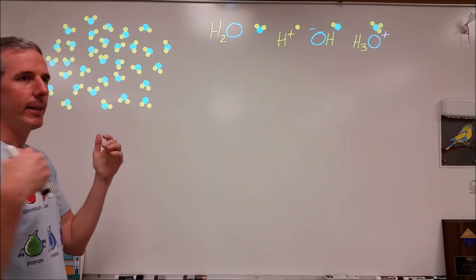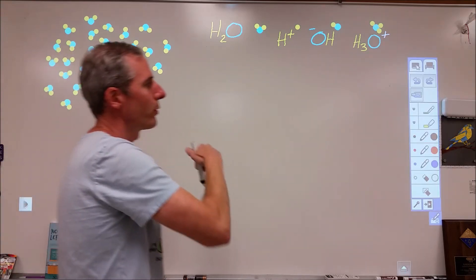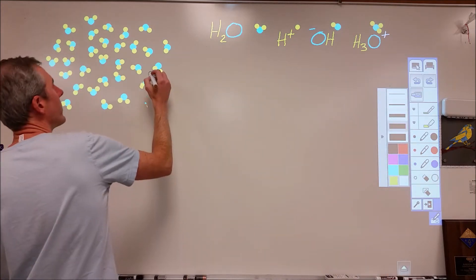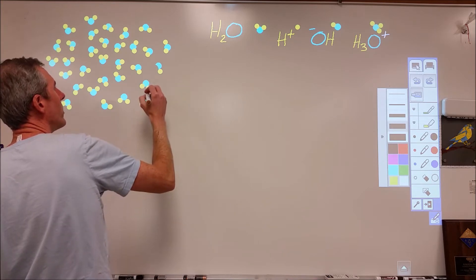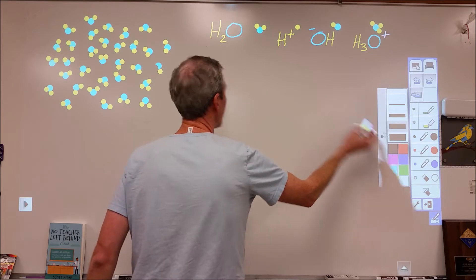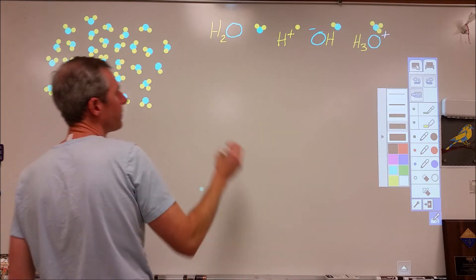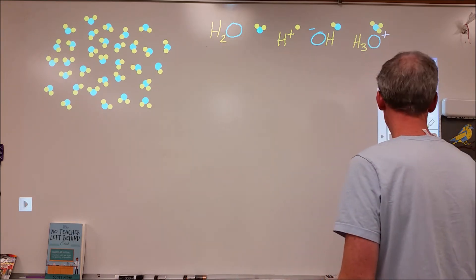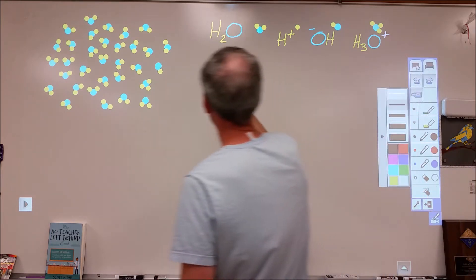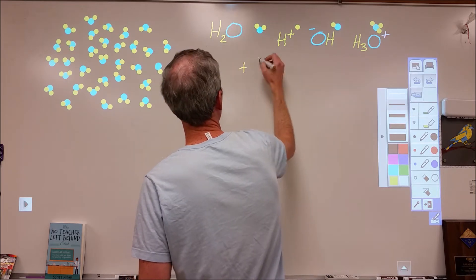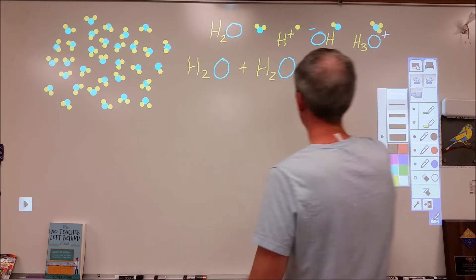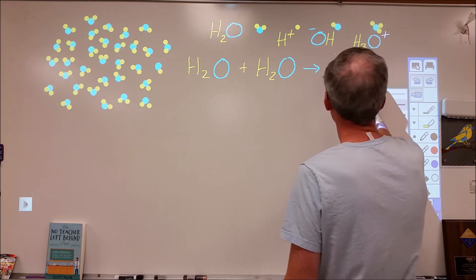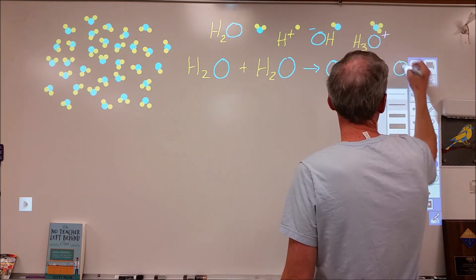Some of the times when they collide, they can hit really hard and in just the right way where one hydrogen moves from one to the other. If that happens — say this hydrogen leaves one water molecule and comes over to another — what we end up forming is a hydroxide and an H3O+. We write that reaction as: two H2O molecules colliding, with the hydrogen ion moving from one to the other, resulting in OH minus plus H3O plus.